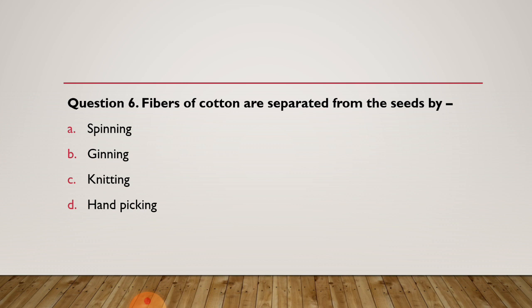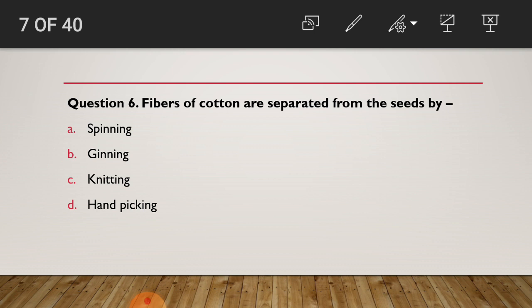Question 6: Fibers of cotton are separated from the seeds by — options are: a) ginning, b) spinning, c) knitting, d) hand picking. Have you chosen your right answer? The answer is: by the process of ginning, fibers of cotton are separated from the seeds. Ginning is the right answer of question 6.